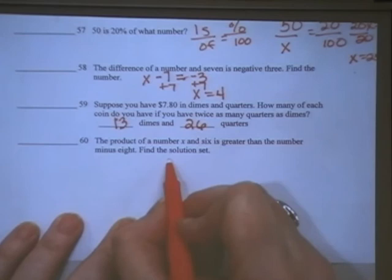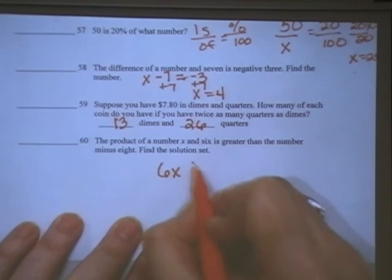Number 60 says the product of a number x and 6. Product means to multiply, so 6 times x is greater than the number x minus 8.